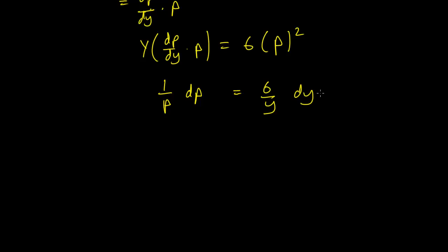Okay, and what we end up with is that we have ln|p| on one side and 6ln|y| on the other plus c, of course.